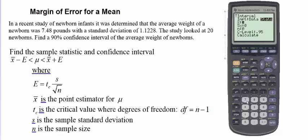So we're going to enter 7.48. I'll enter 1.1228. Our sample size is 20, and we want a 90% confidence interval, so I'm going to put 0.9 here. I'm going to tell it to calculate. And here we go.